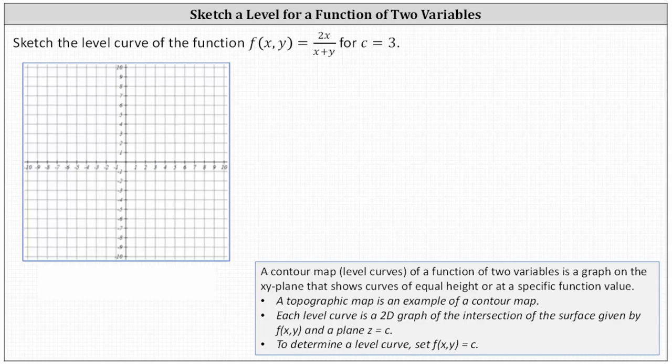Recall a contour map or level curves of a function of two variables is a graph on the xy plane that shows curves of equal height or at a specific function value. For example, a topographical map is an example of a contour map.